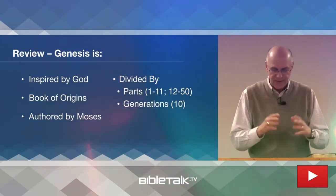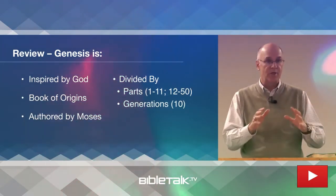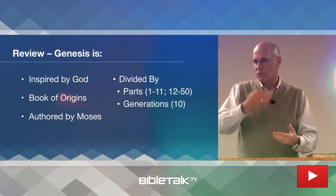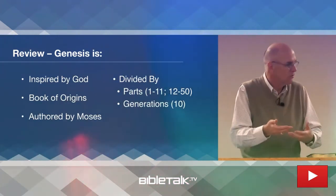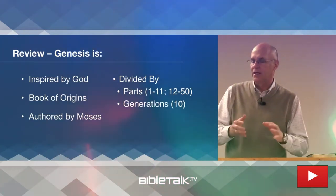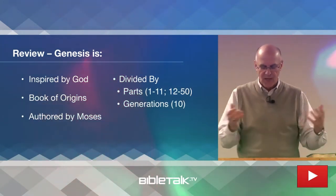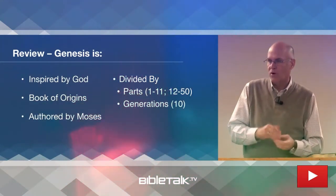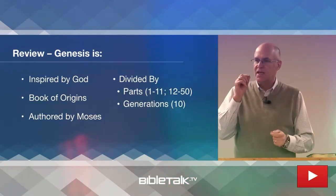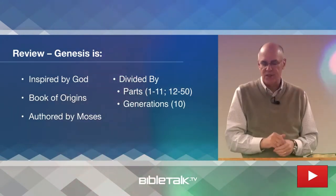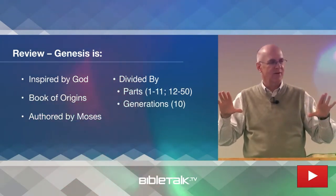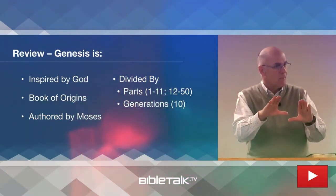We said there are different ways to divide the book if you want to study it. You can divide it up into chapters — there are 50 chapters in all. Those chapters were added by individuals later on to make the book easier to study. Chapters 1 to 11 is the history of the world beginning with creation, and chapters 12 to 50 is the history of one particular nation, which is the Jewish nation.